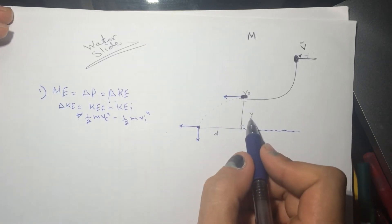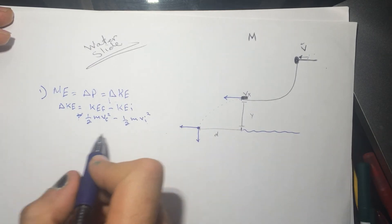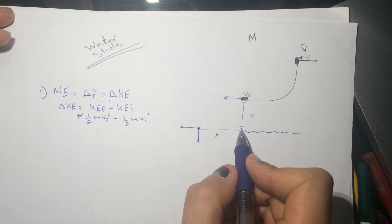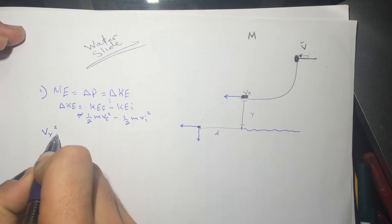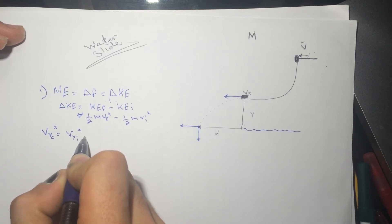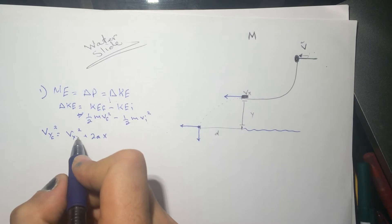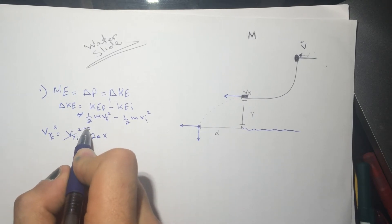So they gave us the Y here. So what we need is to find the VY here. So let's find the VY. So VY squared will be equal to VY, this is final, this is initial squared plus 2AX. This is just equation of motion.